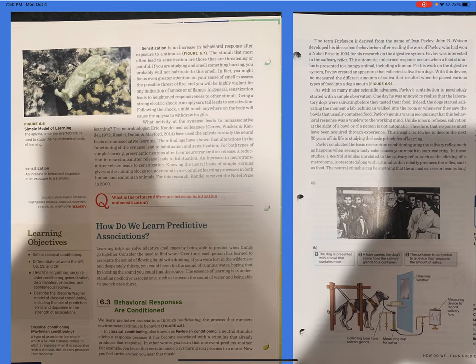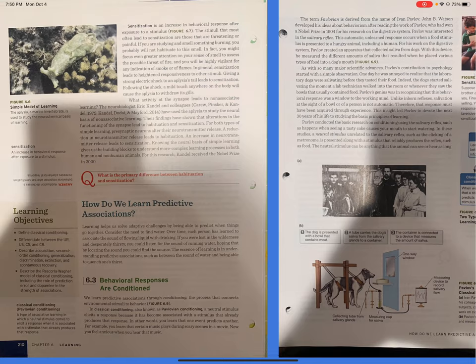How do we learn predictive associations? Learning helps us solve adaptive challenges by being able to predict when things go together. Consider the need to find water. Over time, each person has learned to associate the sound of flowing liquid with drinking. If you are lost in the wilderness and desperately thirsty, you can listen for the sound of running water, hoping that by locating the sound, you could find the source. The essence of learning is understanding predictive associations, such as between the sound of water and being able to quench one's thirst.